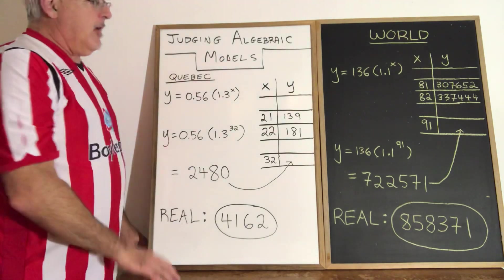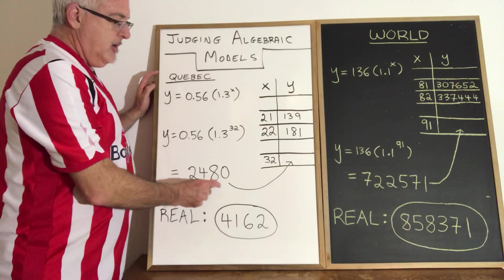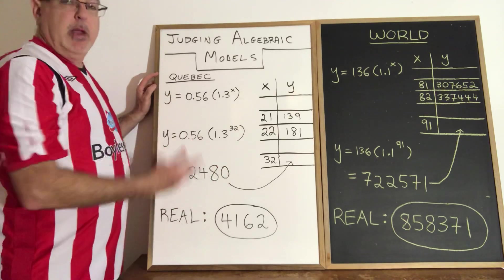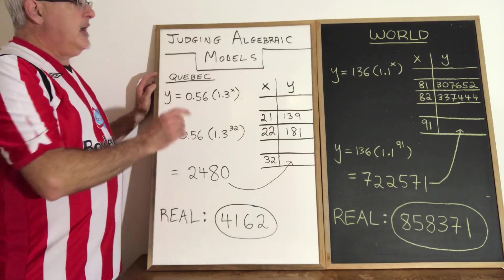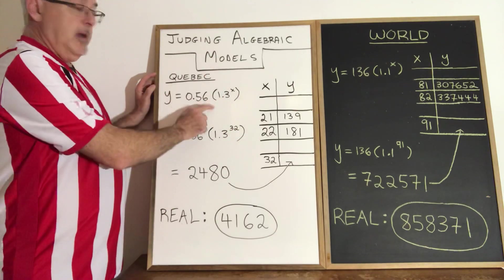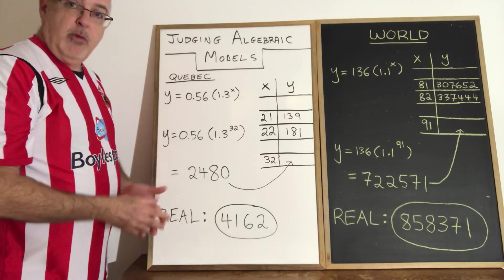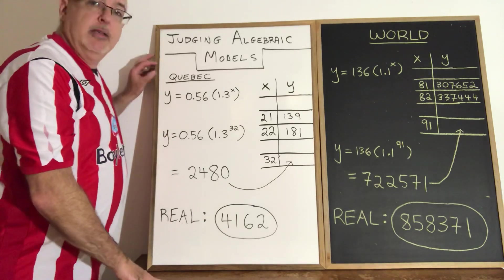When we decide what caused the predicted values to be an underestimate, in the case of Quebec we have one special reason which is that on day 23, the day that I made the video and made this equation, the Quebec government announced that they were changing the way they were going to report the number of cases.